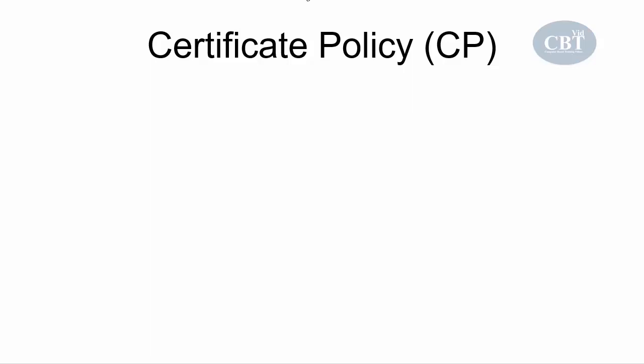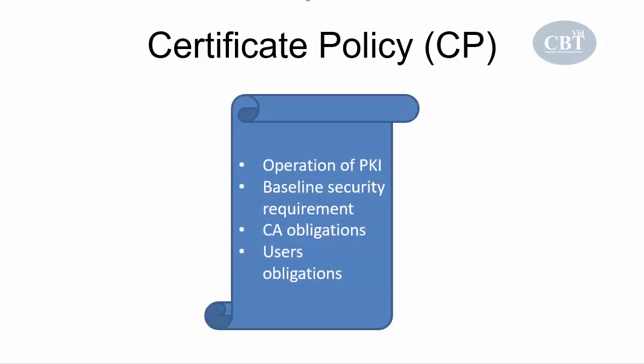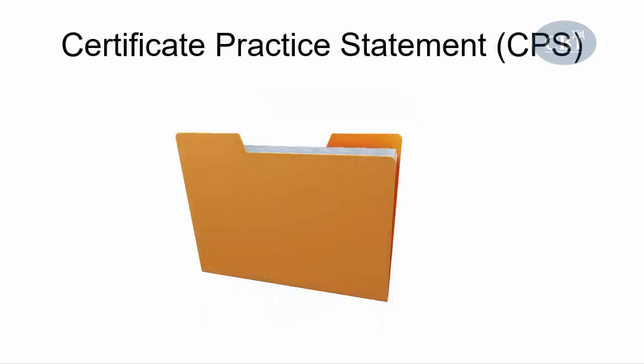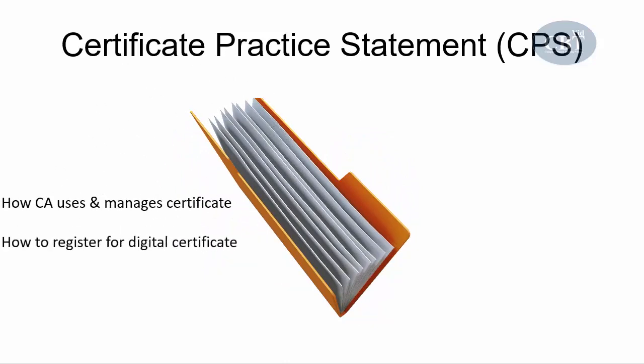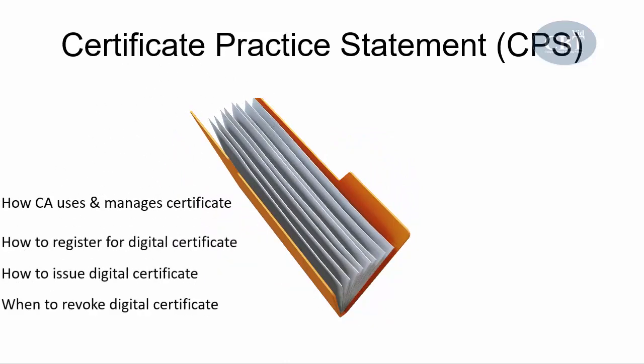Another component under public key infrastructure is certificate policy — a set of rules that governs the operation of a PKI. It provides recommended baseline security requirements for the use and operation of certification authorities, registration authorities, and other PKI components. The next entity is the Certificate Practice Statement, or CPS — a technical document that describes how the CA uses and manages certificates, covering how to register for a digital certificate, how to issue them, when to revoke them, and procedural controls and key pair management.